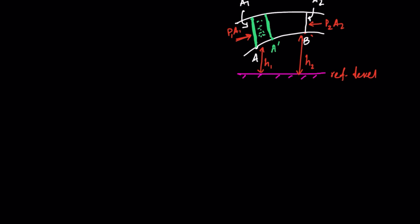The fluid going out of the tube through the area of cross-section at B — the amount of fluid leaving in time delta T — will be contained in the volume between B and B-dash. The fluid is moving with velocity V1 at point A and velocity V2 at point B. So this distance A to A-dash is V1·delta T, and the distance B to B-dash is V2·delta T.